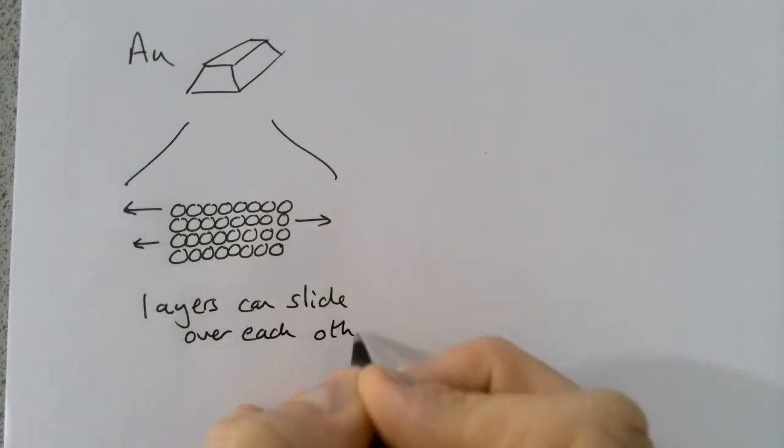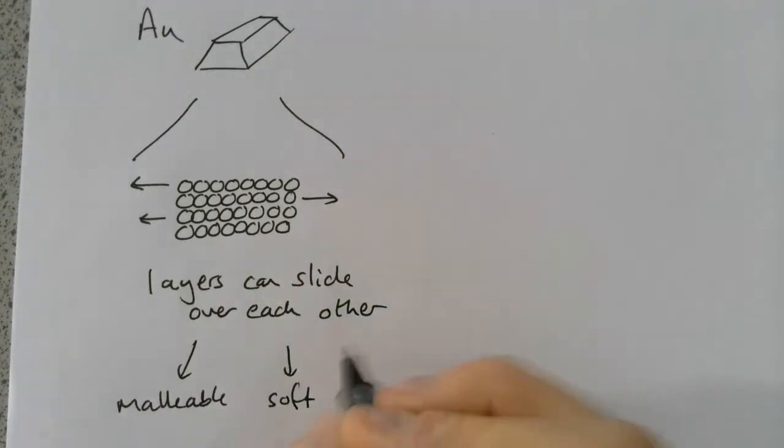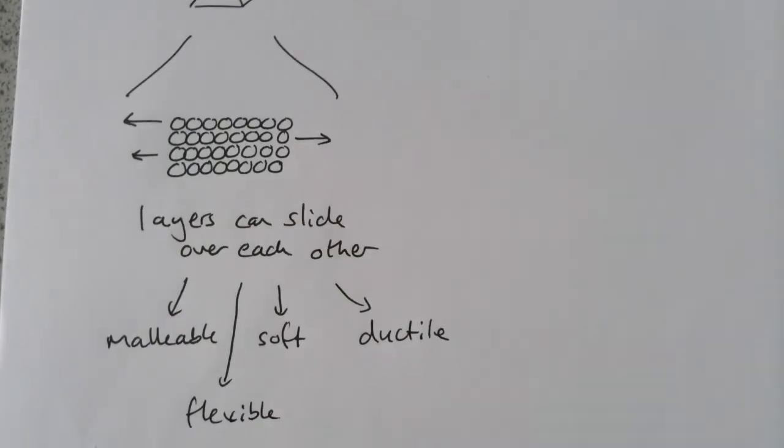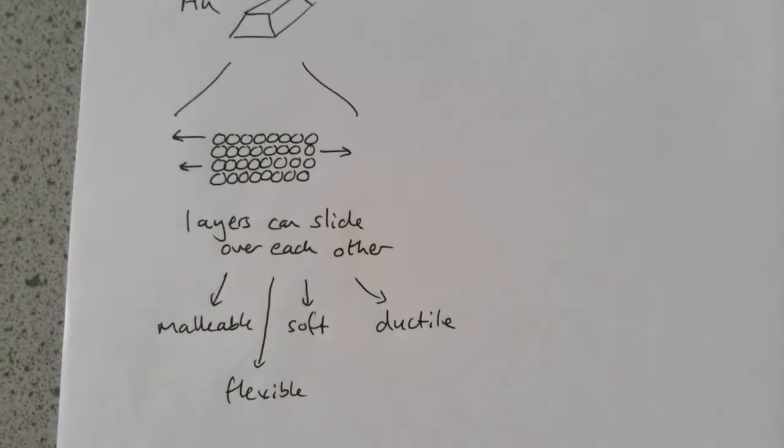As a result of the layers being able to slide over each other, the metals are malleable. They are sometimes a little bit softer than we would expect. They are ductile, which means we can draw them into shapes, draw them into wires. And there is also, usually, some flexibility there as well. That's as a result of having this structure, our pure metals have these properties.